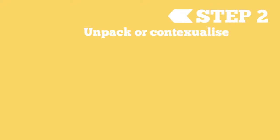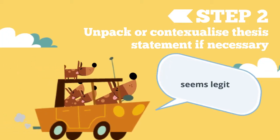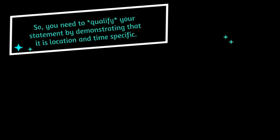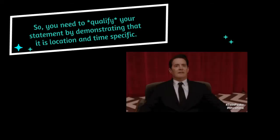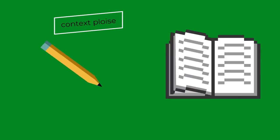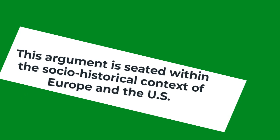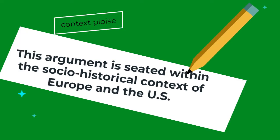Then you unpack or contextualize the thesis statement if necessary. Remember, not all arguments hold across all cultures and all time periods, and this is what we mean by context. So where and when your argument is taking place is important. Otherwise, the reader or marker can easily undermine your argument by saying it is not true in other parts of the world. So you need to qualify your statement by demonstrating that it is location and time specific. In regard to my thesis statement, this specific process took place largely in the West. And because my essay is only 2000 words and I don't have room to unpack the whole of the West, I will narrow down the context even more — for example: 'This argument is seated within the socio-historical context of Europe and the US.' So you seal that argument nice and airtight.